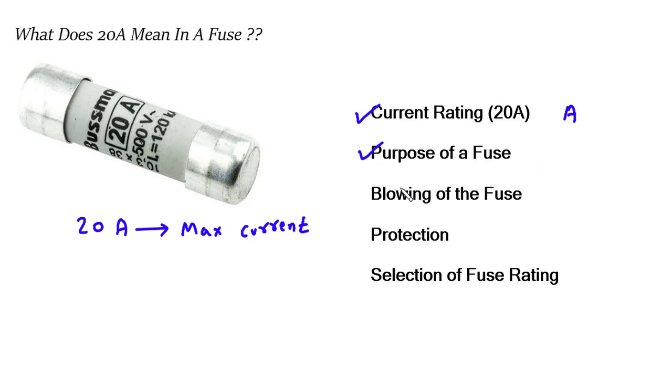Blowing of the fuse. When a current flowing through the circuit exceeds the rated value of the fuse, in this case 20 amperes, the fuse will blow or trip. This means that a small piece of wire or a metal strip inside the fuse melts due to the heat generated by the excessive current. This melting breaks the circuit, interrupting the flow of electricity and protecting the circuit from damage.